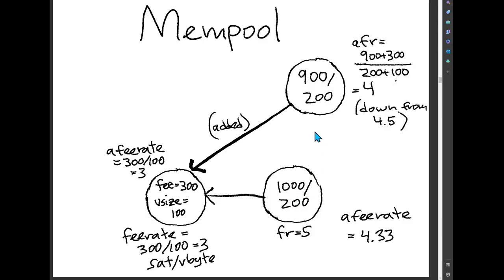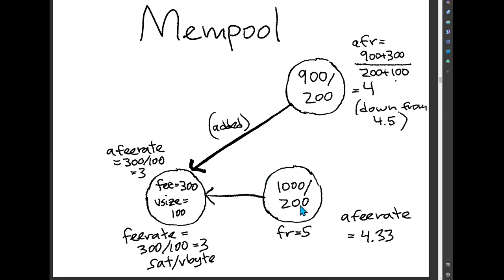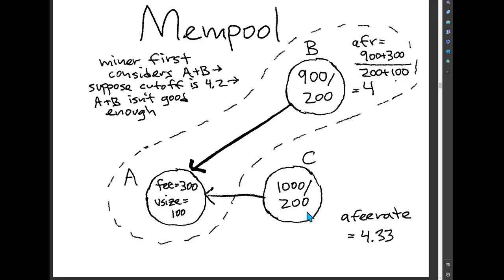Now if we change the hypotheticals slightly so that the third transaction also has this same parent, then these two are sharing the same parent. An interesting thing that happens with this dependency is that this transaction's ancestor fee rate will decrease from 4.5 down to 4, because now its ancestor fee rate is (900+300)/(200+100) = 1200/300 = 4. In general, a parent can drag down the ancestor fee rate of a transaction. A transaction's own fee rate might be higher, but its ancestors can drag it down.